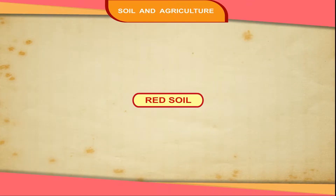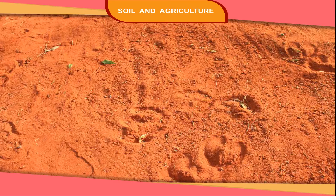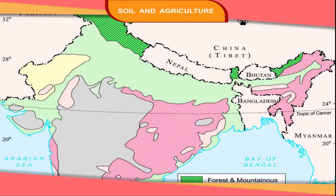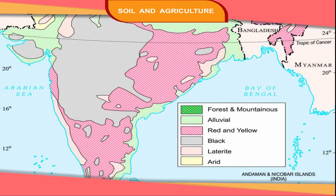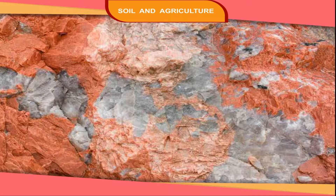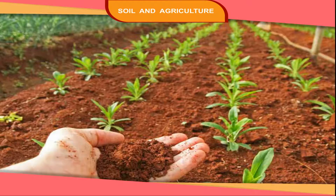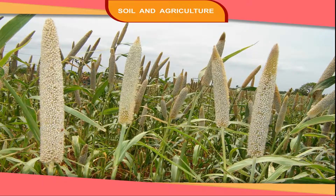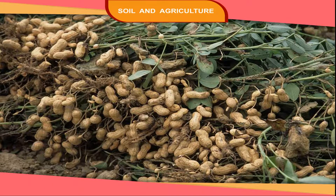Red soil is found in most parts of the southern plateau. It is formed by the breaking of rocks like granite. It is red in colour. Red soil is good for growing millets like jowar, bajra and groundnuts.